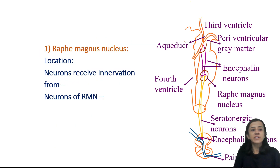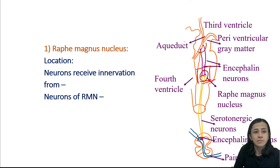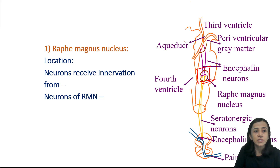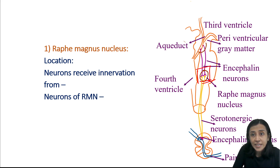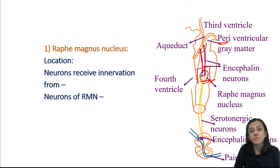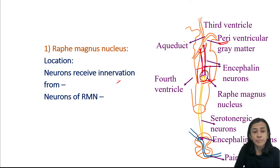One important structure is the raphe magnus nucleus, located in the lower brainstem. Neurons of the raphe magnus receive input from the periaqueductal gray area and reticular formation, as well as fibers from the hypothalamus and frontal cortex. These neurons contain serotonergic neurons as well as substance P-secreting neurons.